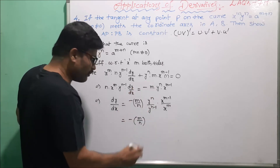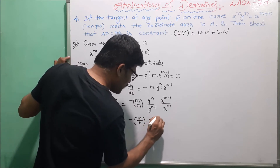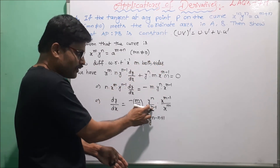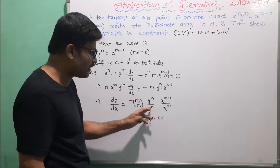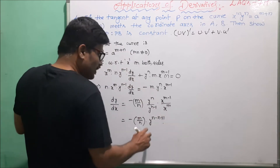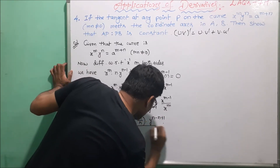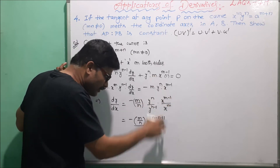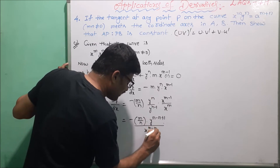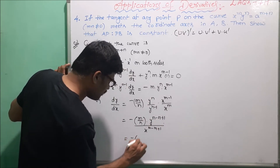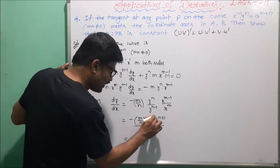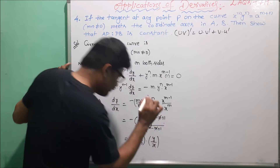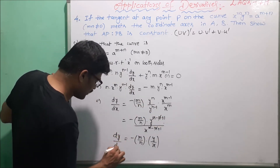After simplification, y^(n-1) taken to the numerator gives y^(n - n + 1) = y^1, and x^(m-1) in the denominator gives x^(m - m + 1) = x^1. So n and n cancel, m and m cancel, leaving dy/dx = minus (m/n) · (y/x). This is the derivative of the curve.